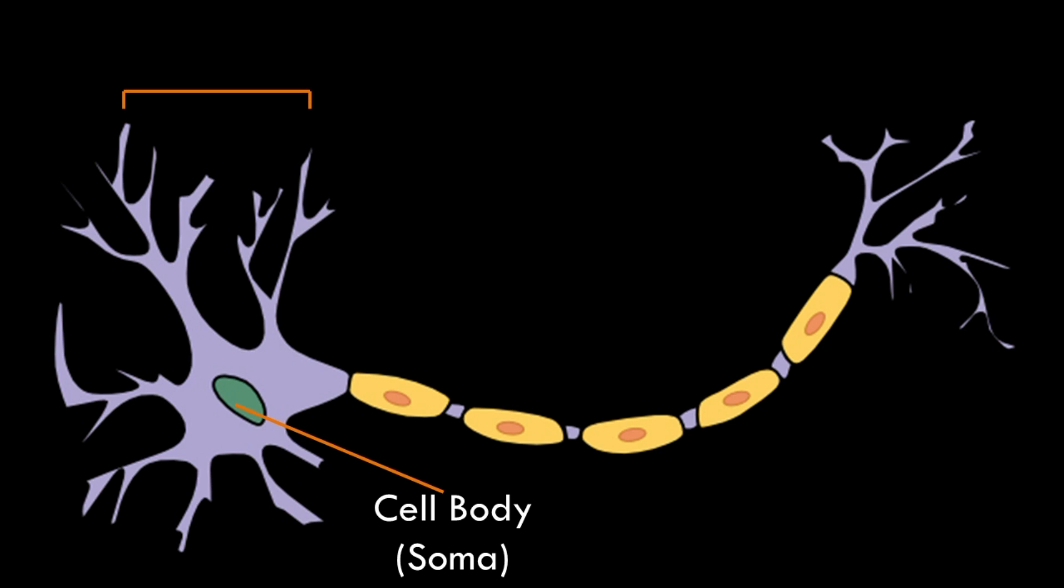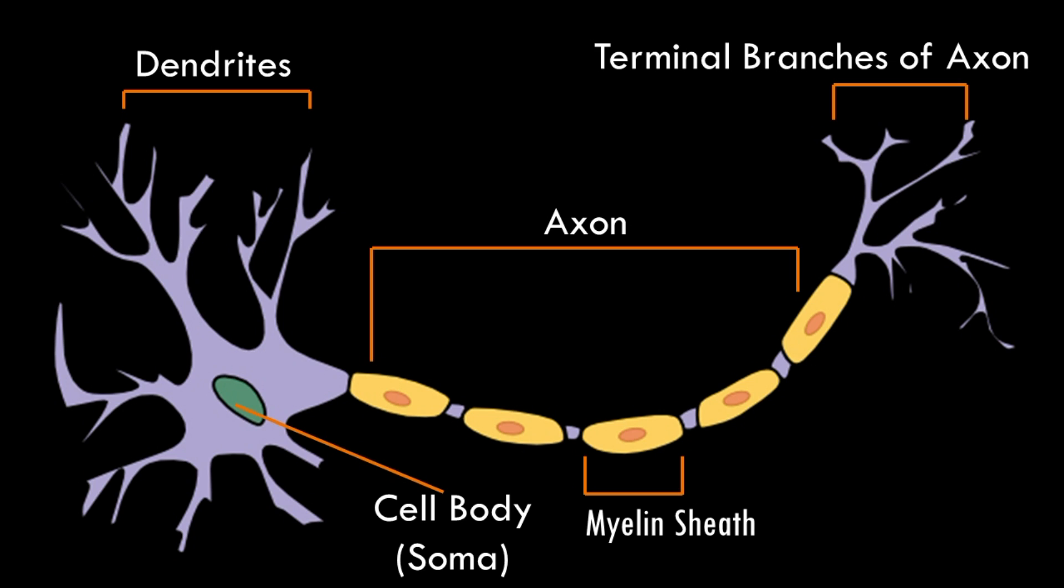The dendrites are branching extensions at the cell body. They receive messages from other neurons. The axon is a single extension of a neuron which is covered with myelin sheath to insulate and speed up messages through neurons. The terminal branches of axon are endings that transmit messages to other neurons.